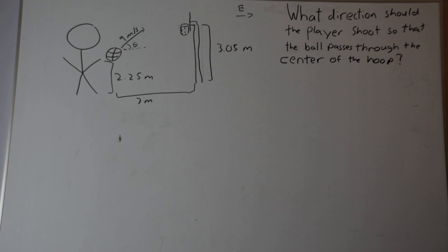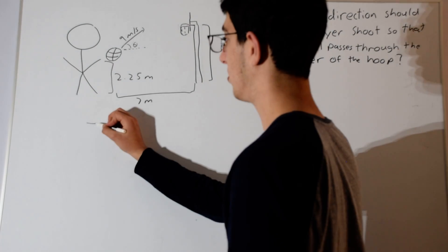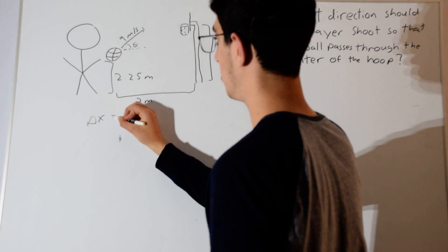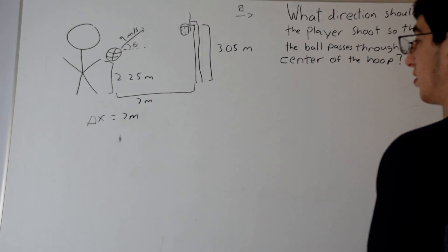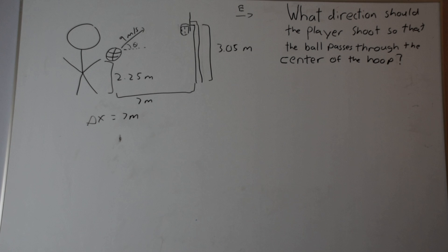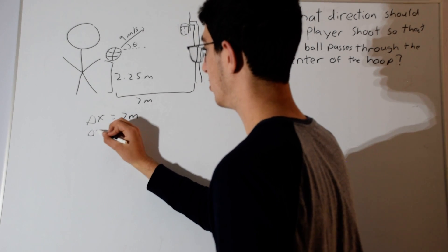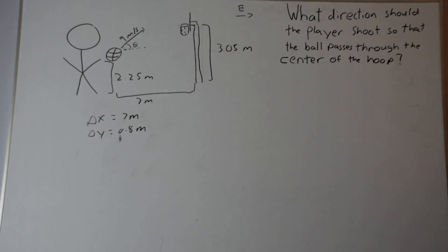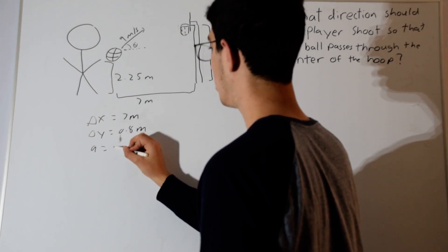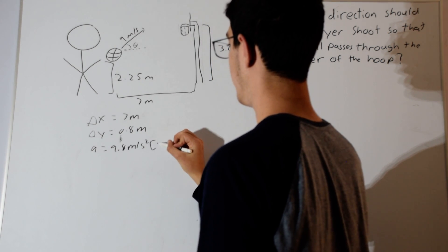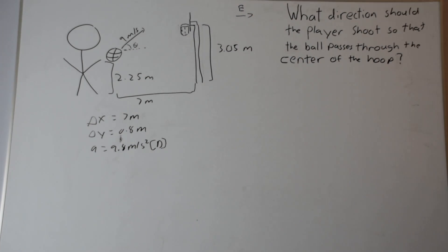Let's write down what information we have. The horizontal displacement of the ball equals the horizontal distance between the ball and the hoop, which is 7 meters. The vertical displacement is the final minus the initial height: 3.05 minus 2.25, which is 0.8 meters. The acceleration of the ball is the acceleration due to gravity, 9.8 meters per second squared, downwards.